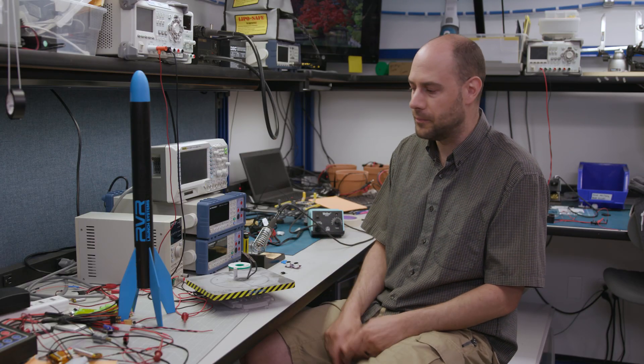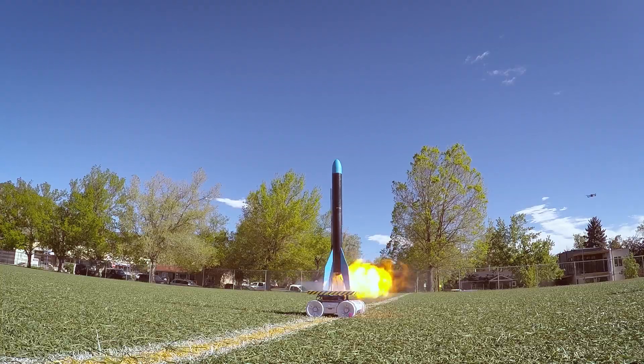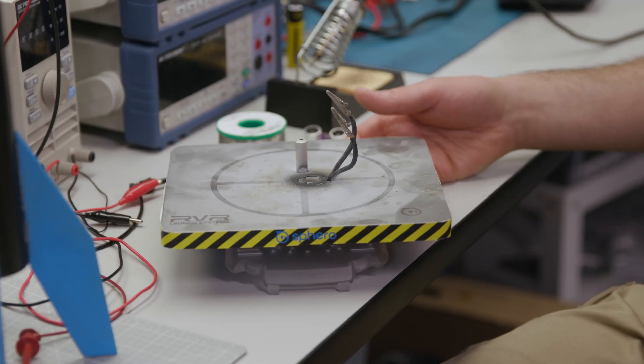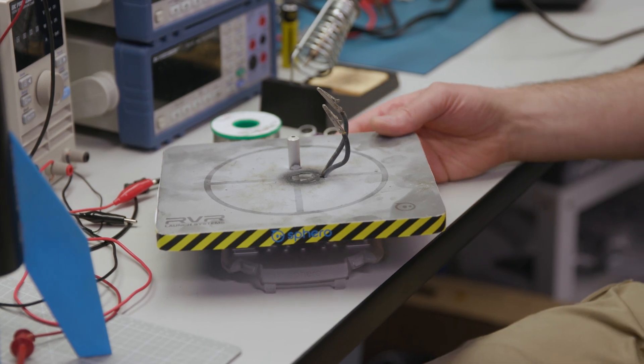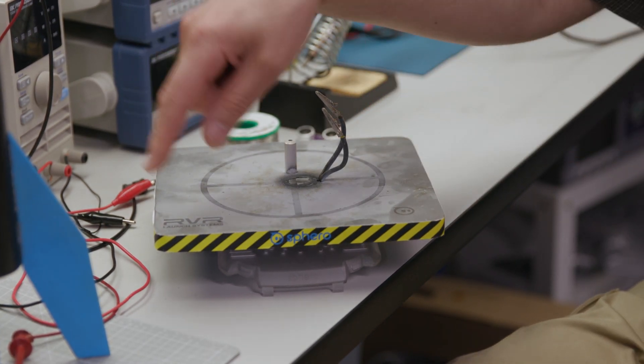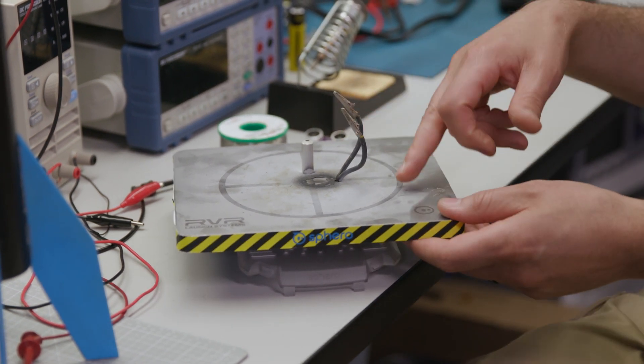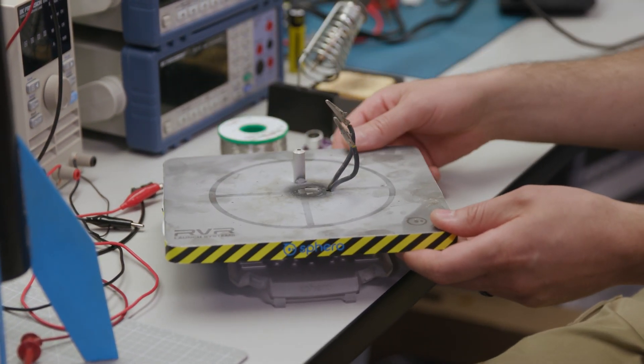This is our Rover launch platform that we made. We had it plasma cut out of 14-gauge steel and then laser etched a crosshair on top of it. We made a little aluminum collar that holds the launch rod.